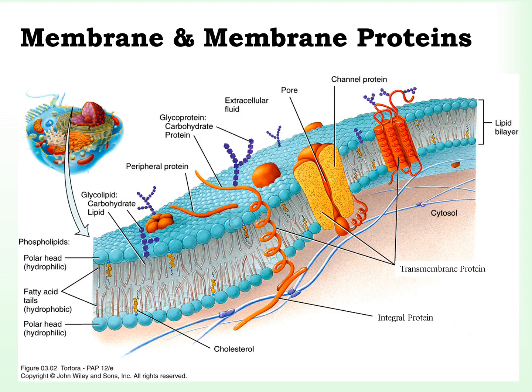The second category is the extracellular protein markers, indicated here as the glycoproteins. The third category is the transcellular or transmembrane proteins. The transmembrane proteins function either as an antigen marker, very similar to the glycoprotein.